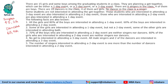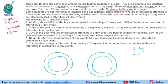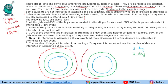Those students interested in attending a three-day event are also interested in attending a two-day event. Those interested in a two-day event are also interested in a one-day event. This can be represented through a Venn diagram with three-day event as the most interior, then two-day, then one-day as the outermost circle.